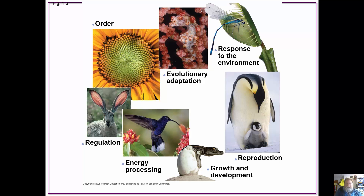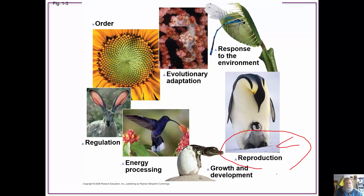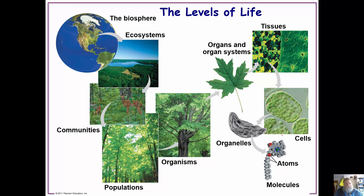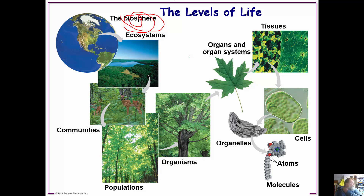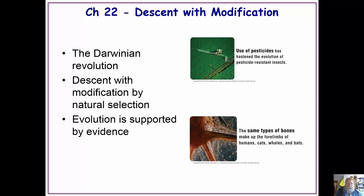We talked about the characteristics of life. One important part of life is being able to reproduce — living things are able to make more of themselves. We also talked about the organization of life, from the very large biosphere, which is all life on our planet, all the way down to the atoms that make up life.